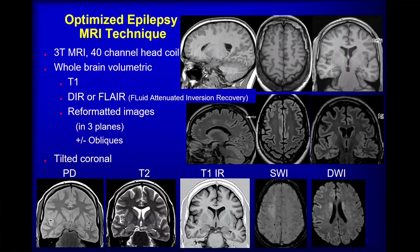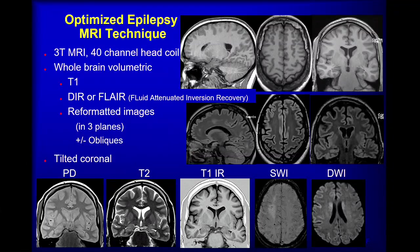Our optimised epilepsy technique uses high field, preferably with a multi-channel head coil, and whole brain imaging is important. We see studies from external institutions where the whole brain is not imaged — that is a critical error. We have whole brain imaging at high resolution with 3D T1 acquisition, and a water-sensitive sequence such as FLAIR or double inversion recovery. The dedicated sequences — coronal proton density, T2, and inversion recovery T1-weighted images — target particularly the hippocampi.